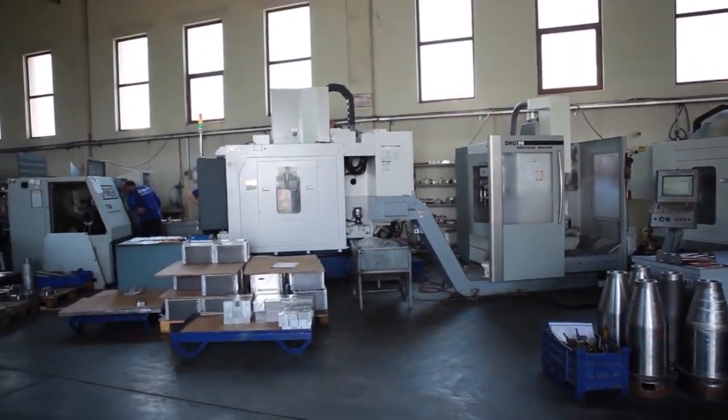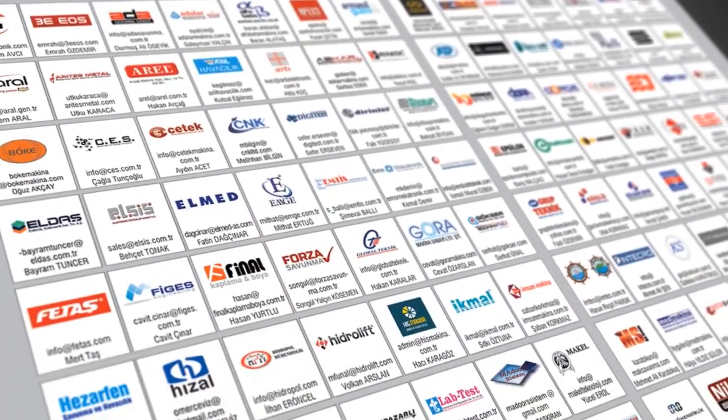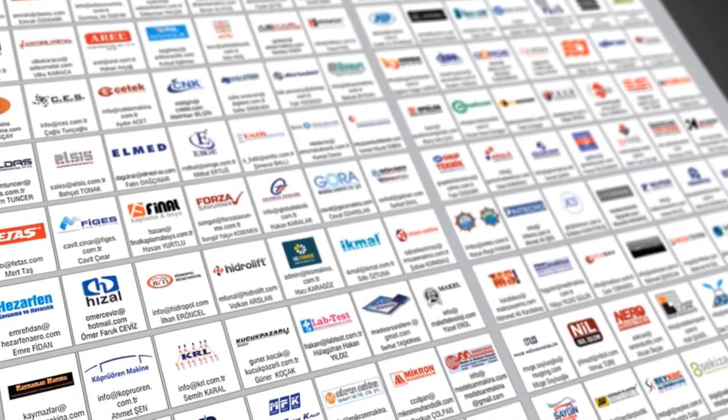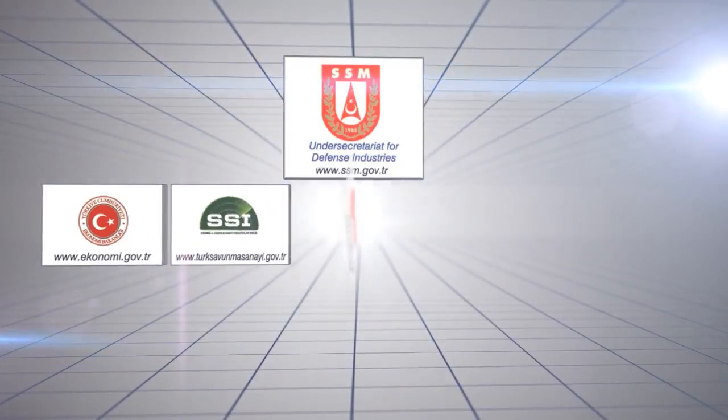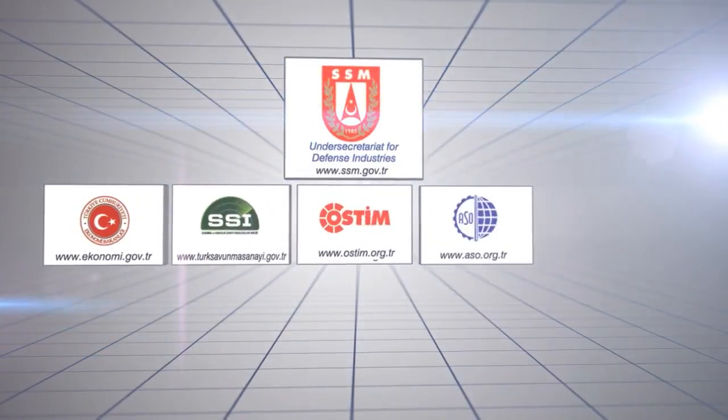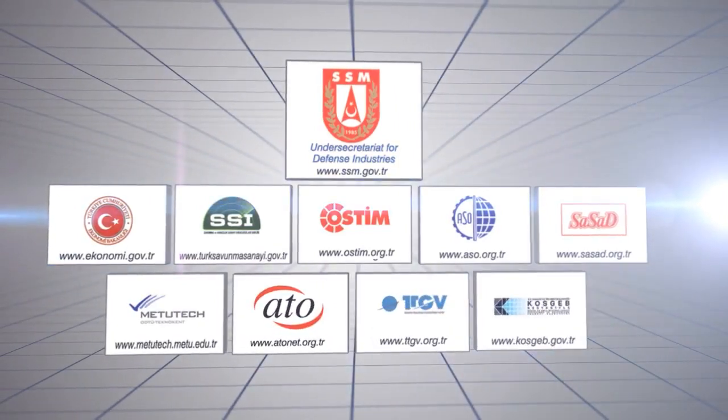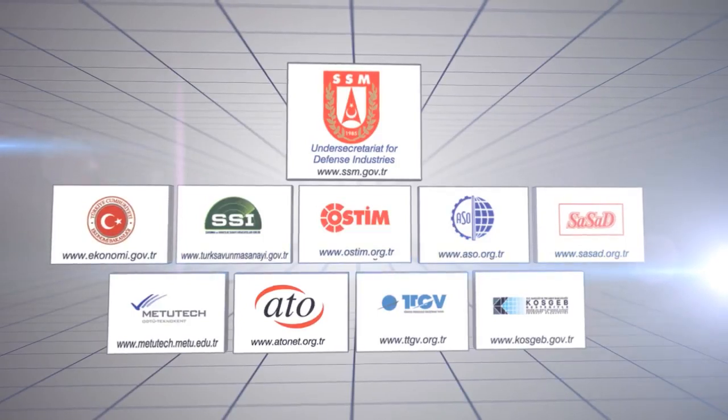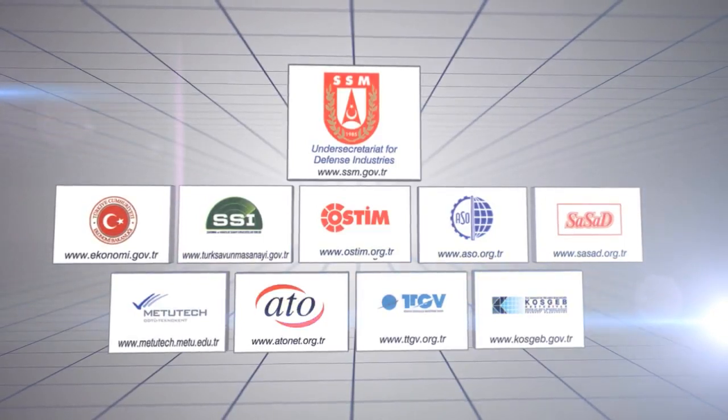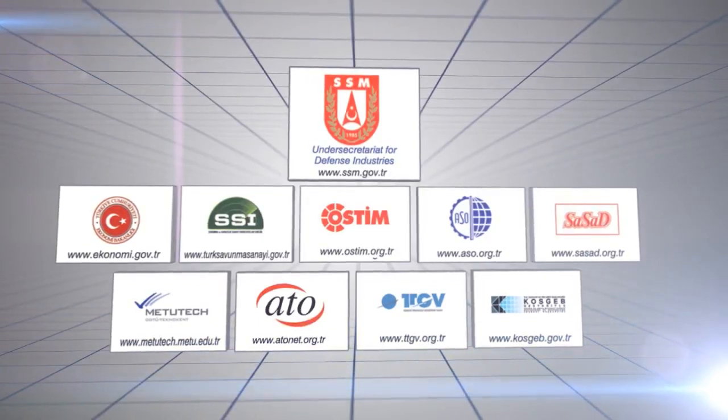OSSA is a civil society organisation developing policies on domestic producers supported by organisations such as Undersecretariat for Defence Industry, Republic of Turkey Ministry of Economy, SSI, OSSTEM organised region, Ankara Chamber of Industry, SASAT, Middle East Technical University Technopark, Ankara Chamber of Trade, Technology Development Foundation of Turkey, and small and medium-sized enterprises development organisation.